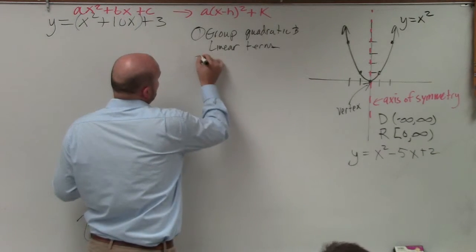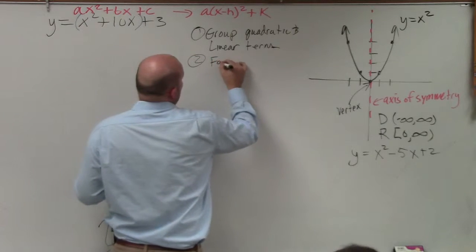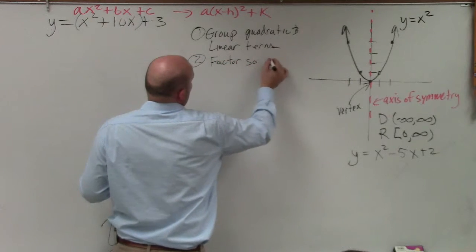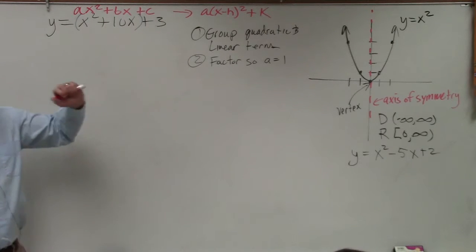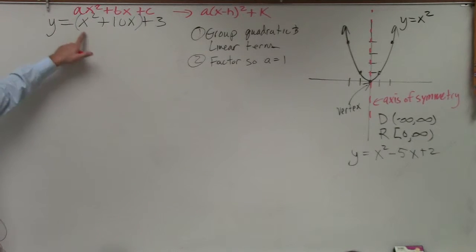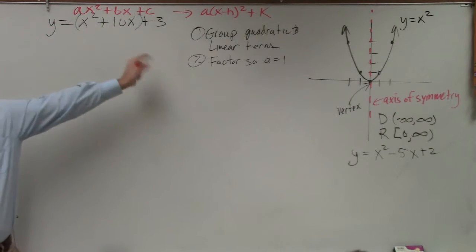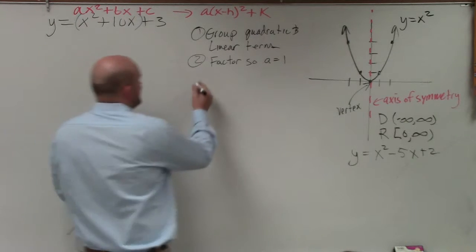Step number two, factor so a is equal to 1. Now, I didn't say factor out GCF. All I said was factor out term so a is equal to 1. In this case, is my a still equal to 1? Yeah. So I can skip number 1, but we're going to do one like that next.